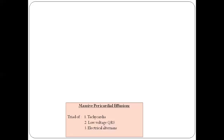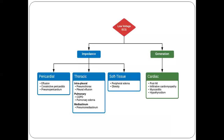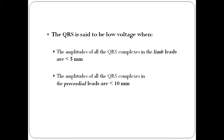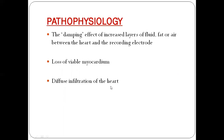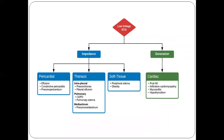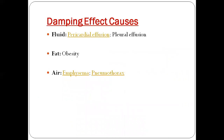To summarize: if your QRS amplitude is less than 5mm in the limb leads or less than 10mm in the precordial leads, it is called a low voltage ECG. It is very important to identify the underlying cause, because treating that cause will automatically lead to improvement of the ECG changes.